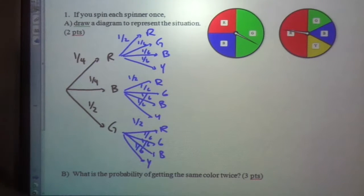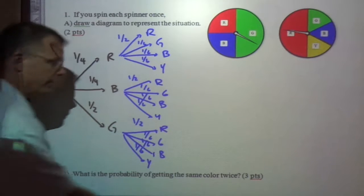So this is problem one, just making a tree diagram. Now I ask, what's the probability of getting the same color twice? We have to look at the paths where that could happen.